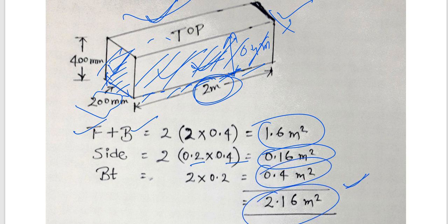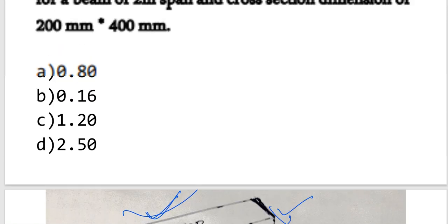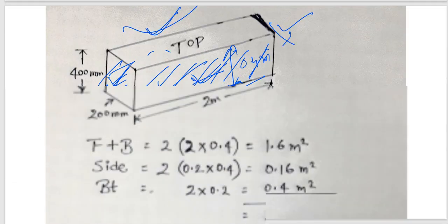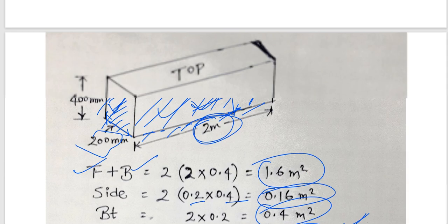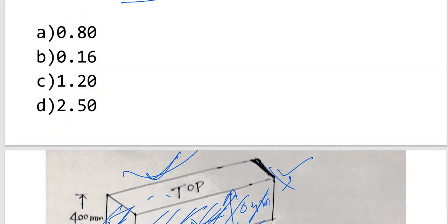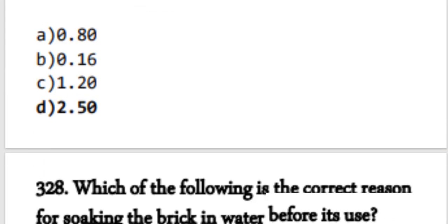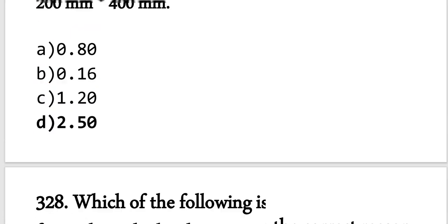The total formwork area is 2.16 square meters. The closest answer option is 2.50, so option D is the correct answer.